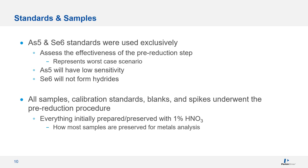Starting with As5 and Se6 allowed us to assess the feasibility and effectiveness of our pre-reduction procedures. All samples, calibration standards, blanks, and spikes underwent the pre-reduction procedure. Since drinking water samples are typically preserved in 1–2% nitric acid, we prepared all our samples and standards in 1% nitric acid before subjecting them to the pre-reduction procedure. Some literature prepares things in HCl to make it easier, but we wanted to keep this practical to real-world usage.